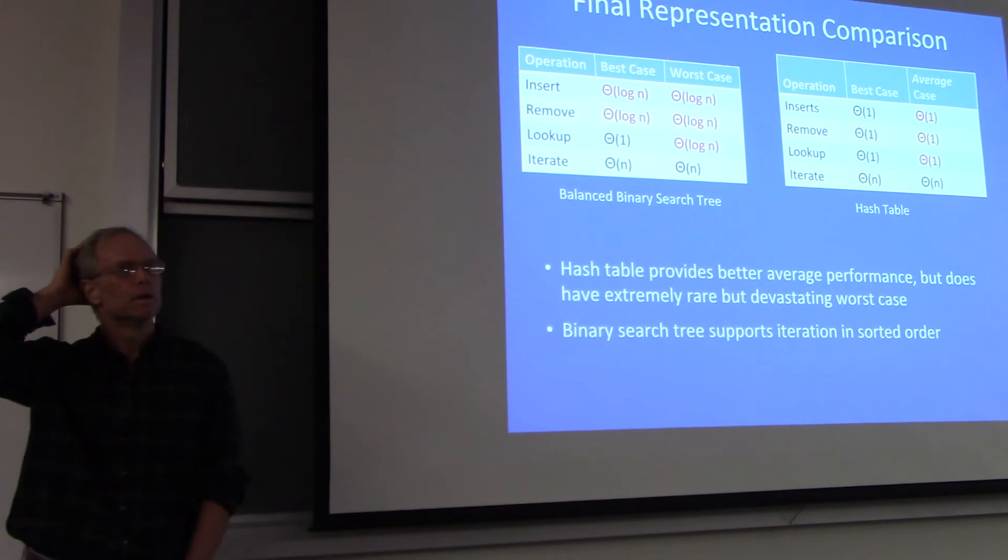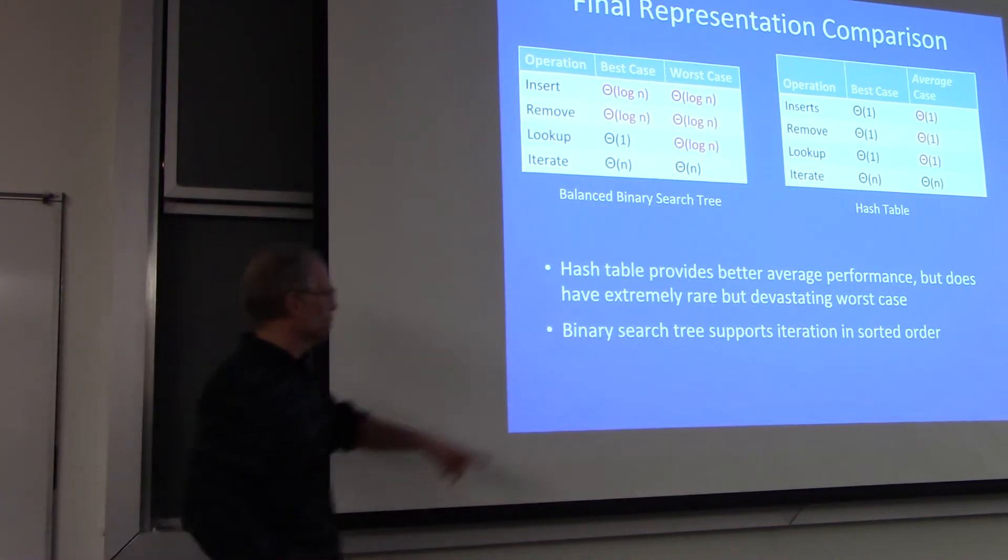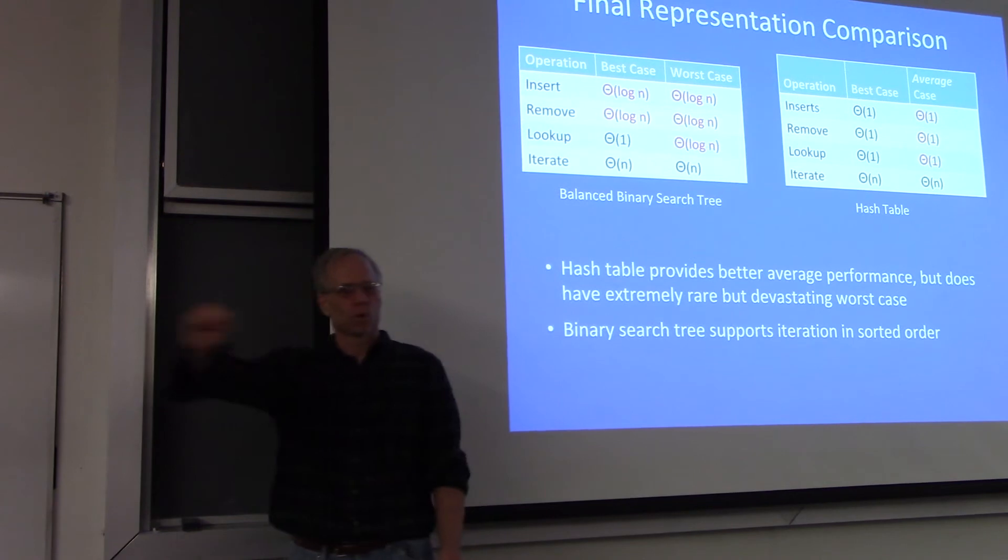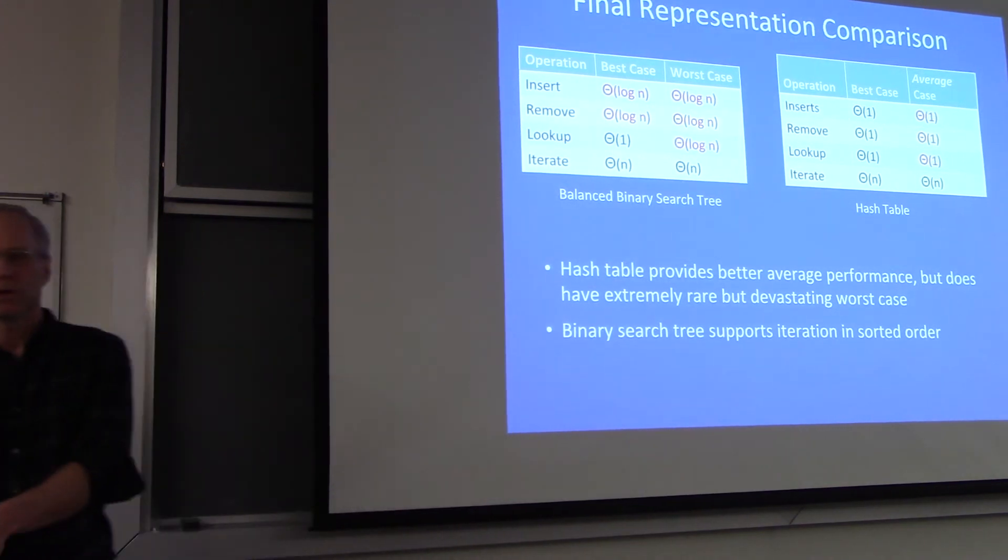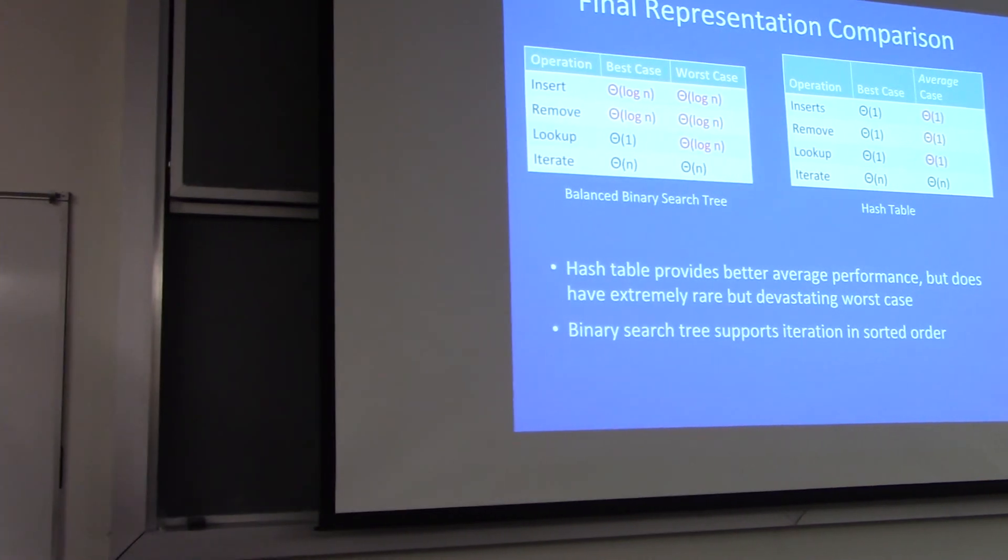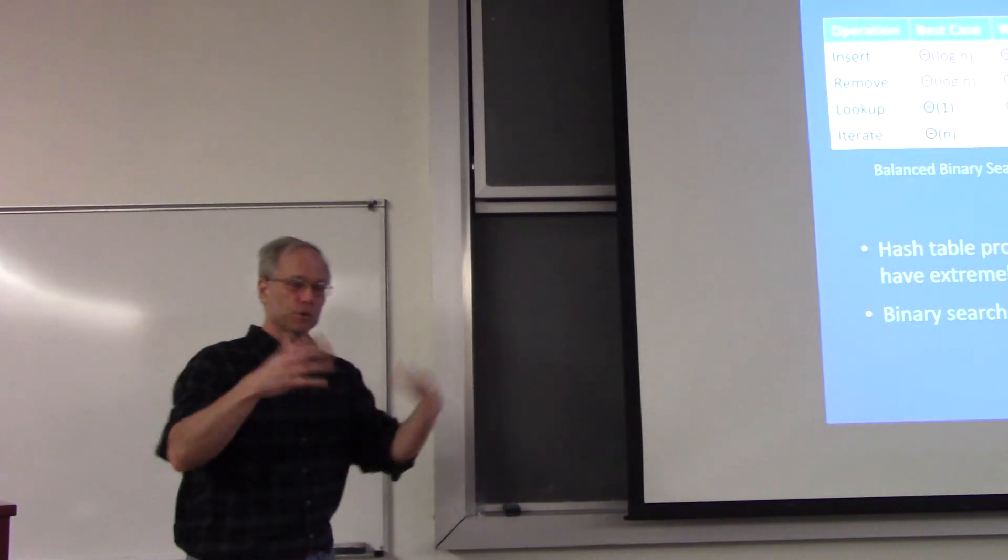You want to come out in sorted order. Okay, that's the big one. If you want to be able to iterate in some order, in some sorted order, then you need a binary search tree. Otherwise, you should use a hash table.